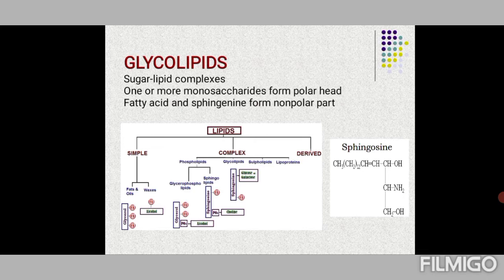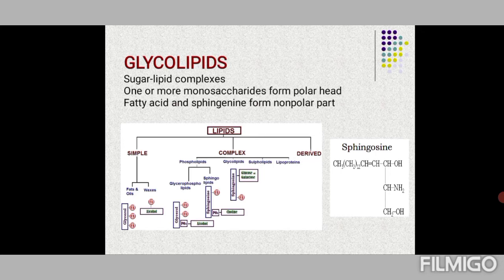Now we move on to glycolipids, the next category under complex lipids. Glycolipids are similar to sphingophospholipids in having sphingenin or sphingosine as the basic alcohol, with a fatty acid attached — but the key difference is that a monosaccharide or oligosaccharide is attached instead of phosphate. This is what makes glycolipids unique and different from sphingophospholipids.